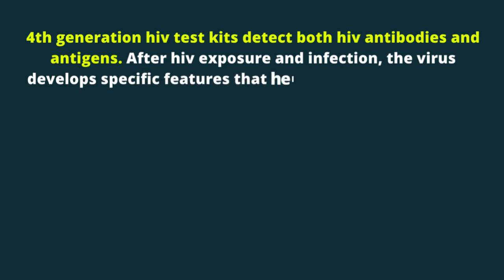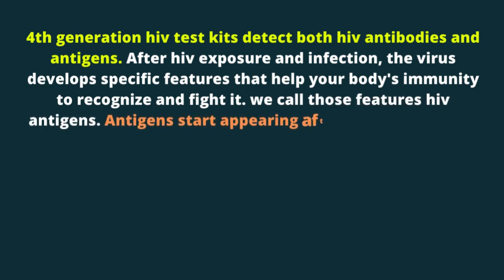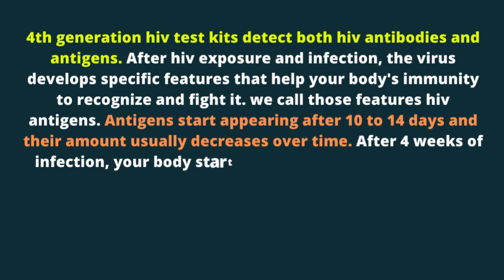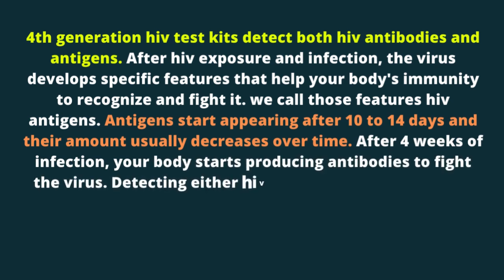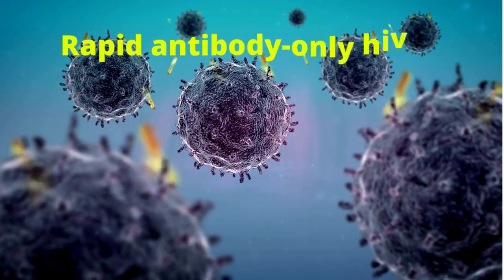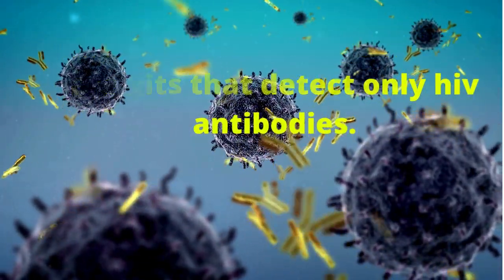Fourth generation HIV test kits detect both HIV antibodies and antigens. After HIV exposure and infection, the virus develops specific features that help your body's immunity to recognize and fight it — we call those features HIV antigens. Antigens start appearing after 10 to 14 days and their amount usually decreases over time. After four weeks of infection, your body starts producing antibodies to fight the virus. Detecting either HIV antibodies or HIV antigens signifies you are infected. Rapid antibody-only HIV tests are kits that detect only HIV antibodies.